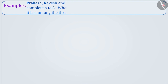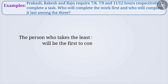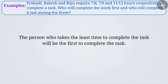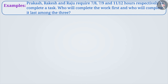Next example. Prakash, Rakesh and Raju require 7 by 8, 7 by 9 and 11 by 12 hours respectively to complete a task. Who will complete the work first and who will complete it last among the three? The person who takes the least time will be first and the person who takes the longest will be last. So, in this example, in order to compare the fractions, we need to arrange them in a certain order.